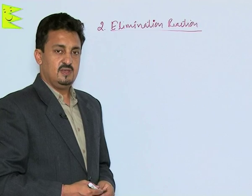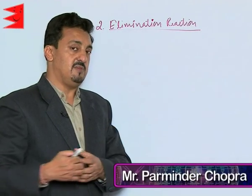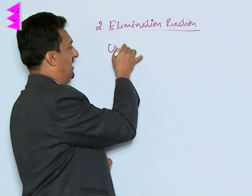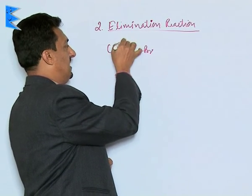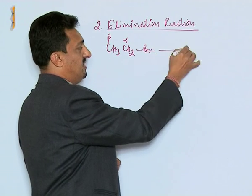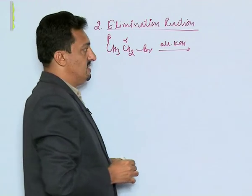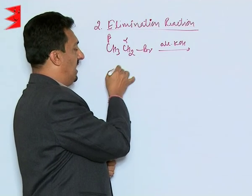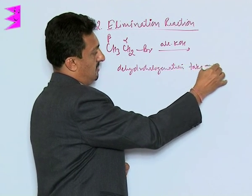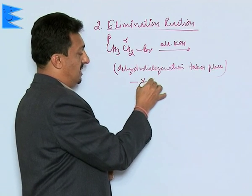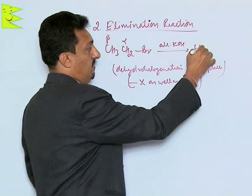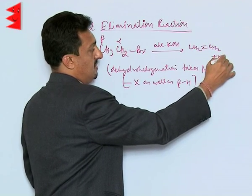The second type of reaction alkyl halides show is elimination. When an alkyl halide having a beta hydrogen is treated with alcoholic KOH, dehydrohalogenation takes place — the halogen and the beta hydrogen are both lost, giving an alkene plus KBr and water.